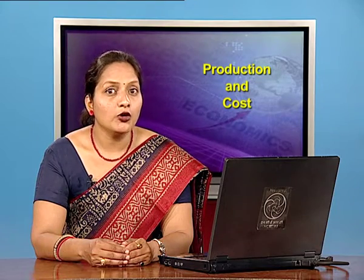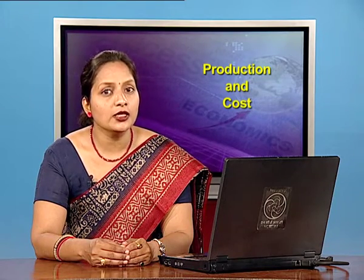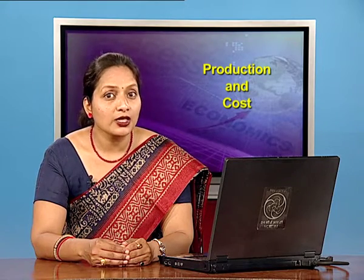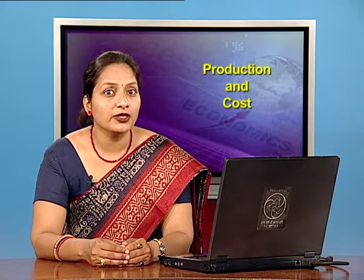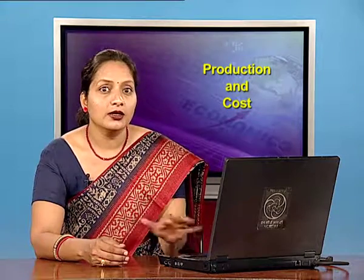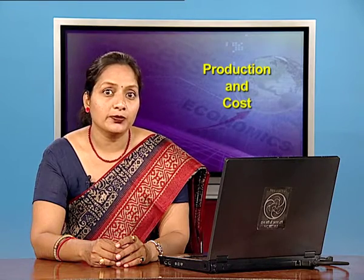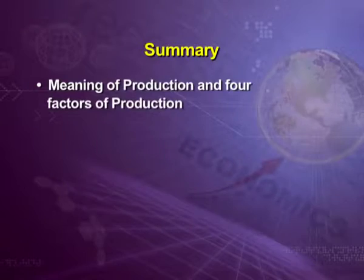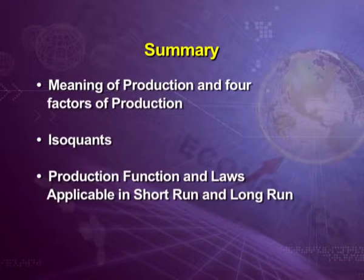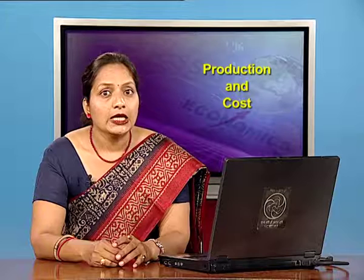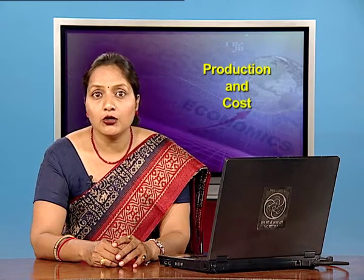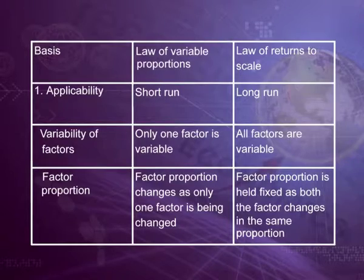The reason for operation of the long run law is economies and diseconomies of scale, which will be discussed in our next lecture on cost and its various types. To summarise what we have covered: meaning of production and four factors of production, isoquants, production function, and laws applicable in short run and long run. There is a difference between short run law and long run law — that is, a difference between the law of variable proportions and the law of returns to scale.